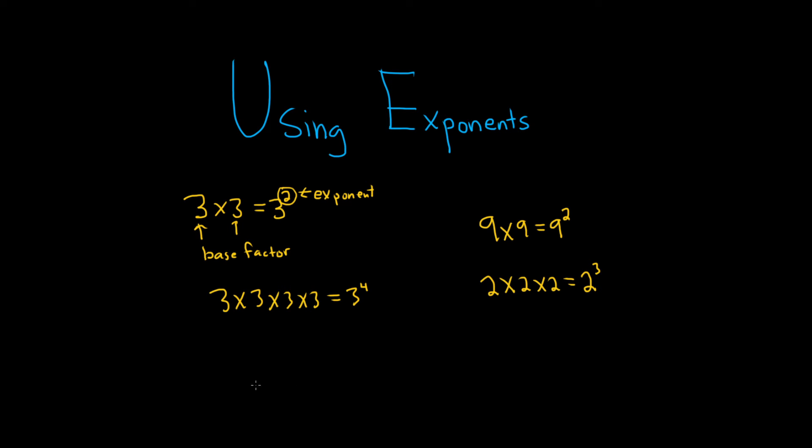So let's do some examples of actually computing some things. Let's say we have six squared. Six squared means six times six because it's a two so you have two sixes. And we know from multiplication that that's equal to 36. So we can say that six squared is equal to 36. Let's try another example.